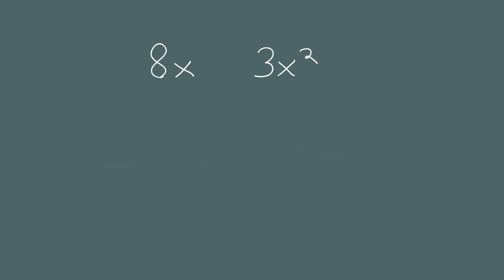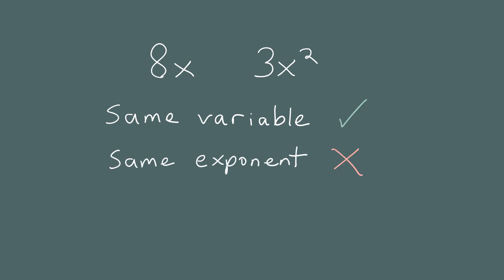Now look at the two terms 8x and 3x squared. Are these like terms? No. They both have the variable x, but they are raised to different powers — their exponents are different. Can you add these terms together? Yes you can, but you just get 8x plus 3x squared. The deeper question is: can you simplify this expression? Can you combine these two terms? No, you cannot. Because these are not like terms, our earlier reasoning does not work. We have 8x's and 3x squareds, but since x is a variable, x and x squared are as different as apples and oranges.